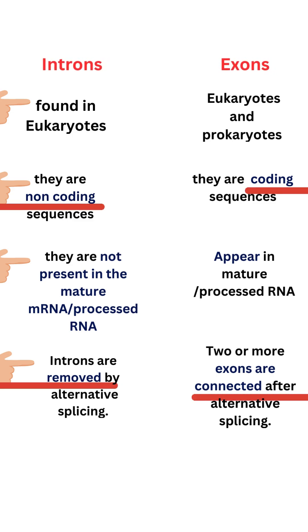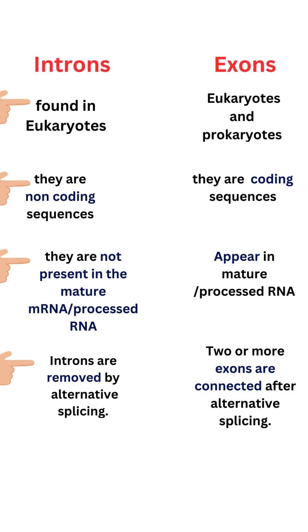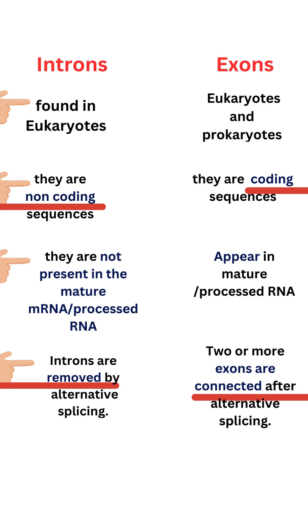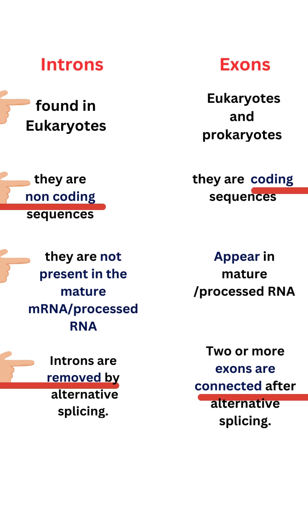Introns are not present in mature mRNA, but exons appear in the mature RNA. Introns are removed by splicing, but two or more exons are connected together.